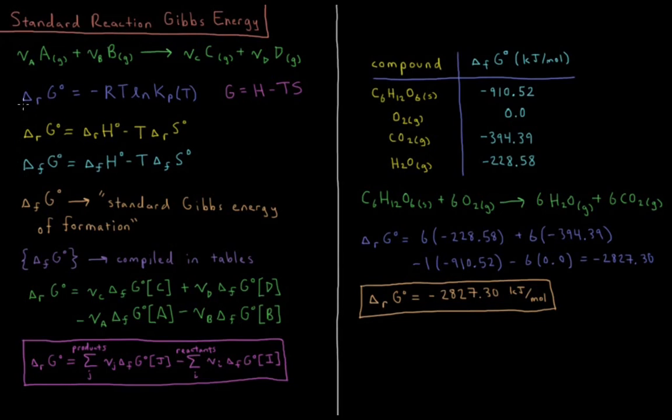From our previous videos, we have that the standard Gibbs energy of reaction is equal to minus gas constant times temperature times the natural log of the equilibrium constant in terms of pressure. The equilibrium constant is a function of temperature, but it is independent of pressure.